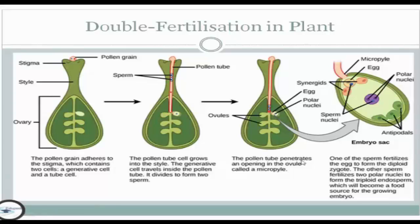The pollen tube penetrates an opening in the ovule called the micropyle. In the embryo sac, one of the sperm fertilizes the egg to form the diploid zygote, and the other sperm fertilizes the two polar nuclei to form the triploid endosperm nucleus, which becomes a food source for the growing embryo.